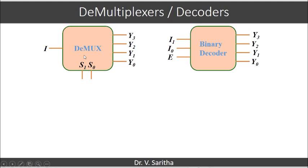If you see, S1 S0 and I are the inputs. So this I in the demultiplexer behaves like the enable input in the binary decoder, and S1 S0 are nothing but I1 I0 actually.